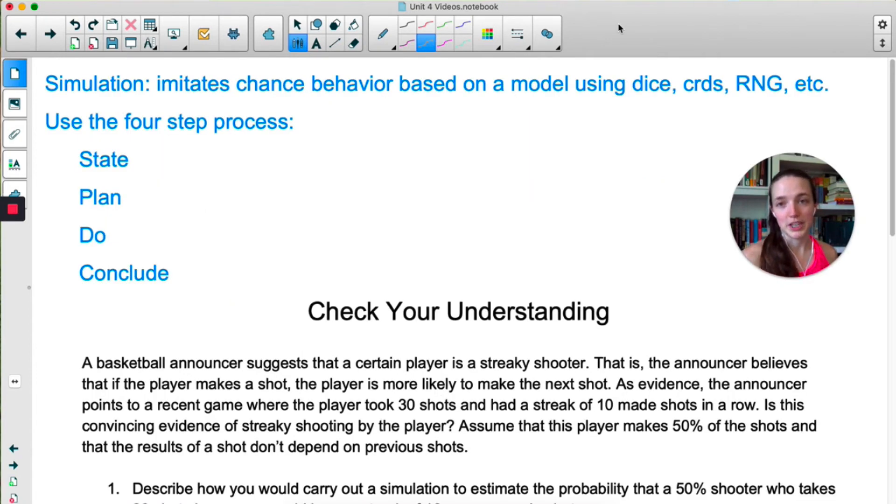So what we just did was called a simulation. It's basically imitating chance behavior based on some kind of model, and you can use any random kind of element. You could use dice, cards, a coin flip, a random number generator. I would say a random number generator is the most common because you have one on your calculator. And it's important to know that your conclusion is based on that simulation. It's not a definitive answer to the question that you asked. It's based on this simulation. And you can see that in the fact that everyone who does this video is going to have a slightly different answer because everyone will have a different number of trials.